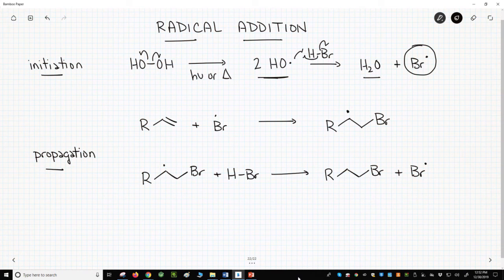For propagation, Br dot reacts with an alkene. The attack occurs so that the most stable radical is formed. Therefore, the radical attacks the less substituted carbon to put the new radical on the more substituted carbon. This is a secondary radical.